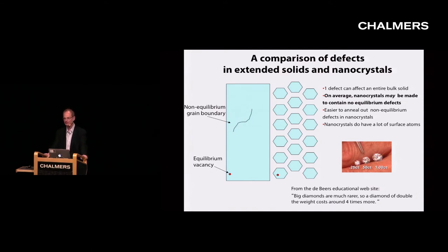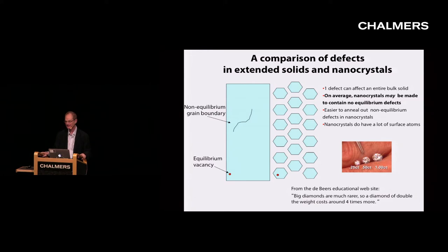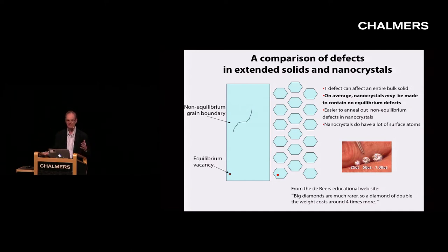One scaling law that everybody turns out to be familiar with in some sense is the one concerning defects in nanoparticles. If you go to the jewelry store to buy a diamond, you are rapidly forced to select a certain size—because of the famous scaling law that, from the De Beers educational site, big diamonds are rarer, and a diamond of double the weight costs four times more. Imagine there's a non-equilibrium defect inside a crystal—it will anneal out, but it takes time. The time to anneal a defect out of a crystal scales roughly exponentially with the volume. So a very high-quality large crystal will be extremely rare.